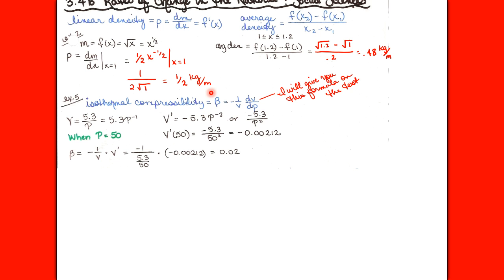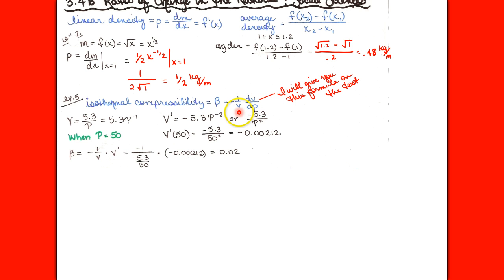Compressibility is defined by introducing a minus sign and dividing dV/dp by the volume V. On a test, AP would give you the formula for compressibility, the formula for V, and the instant to evaluate it. In this example V = 5.3/p and we need compressibility when p = 50. You need both V and dV/dp evaluated at p = 50.